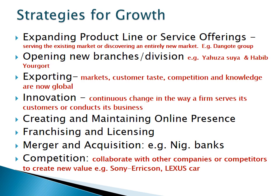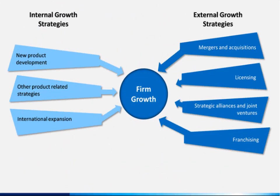Toyota and Honda came together to produce the Lexus car. LG TV and Hisense TV are producing an LG-Hisense TV. These growth strategies can be further broken into internal growth strategy — covering new product development, other product-related strategies, and international expansion — and external growth strategy, which includes mergers and acquisitions, licensing, strategic alliance, joint venture, and franchising.